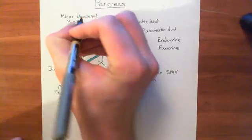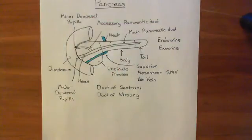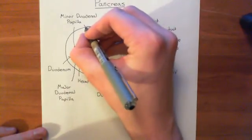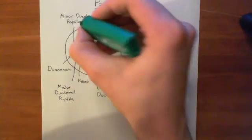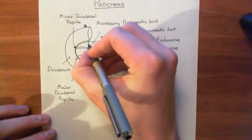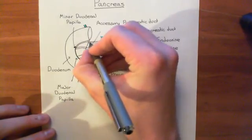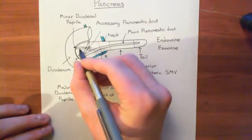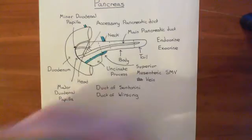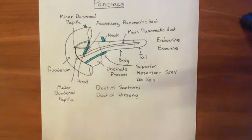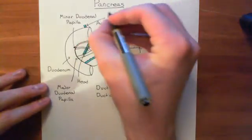One final thing: the common bile duct actually empties itself into the main pancreatic duct. The common bile duct comes down from the liver, goes behind the duodenum, and then behind the pancreas. It then enters the pancreas and dumps its contents into the portion of the main pancreatic duct after the accessory pancreatic duct has come off — so this is all happening behind the pancreas before it empties into that portion of the main pancreatic duct.